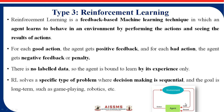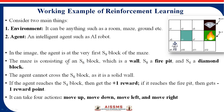Let's learn reinforcement learning with an example. Consider two main things: one is the environment and another is the agent. The environment can be anything such as a room, maze, ground, or a particular setting where a robot or person works. In this image, there are total 12 boxes — this represents one environment, like an online game. The agent is an intelligent entity such as an AI robot or a person involved in the game.